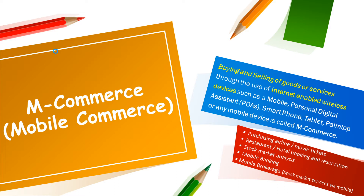Examples of M-commerce include purchasing airline tickets using MakeMyTrip, movie tickets using BookMyShow, restaurant or hotel booking and reservation, and stock market analysis and performing share and stock transactions. Two important terms here are mobile banking and mobile brokerage. Mobile banking means customers can access account balance, make transactions, and do banking-related transactions via mobile phone. Mobile brokerage means stock market services like purchase or sale of shares via mobile device.